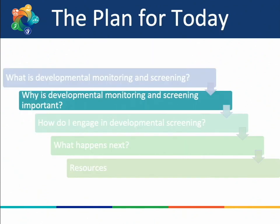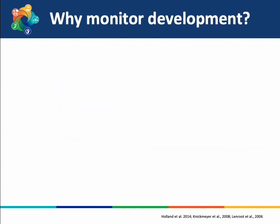Now that we've introduced developmental monitoring and the areas we monitor, let's talk about why it is so important. Developmental monitoring and conducting regular developmental screenings help us identify and understand when a child may have a delay in one or more areas of development. This is the first step in determining if a child may need services. A delay means a child is having difficulty in an area compared to what is expected for their age, and monitoring is especially important in the earliest months and years due to brain development.